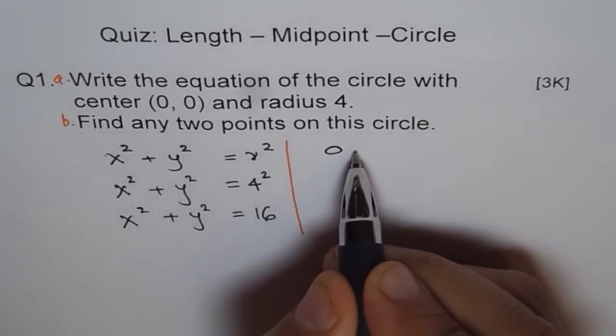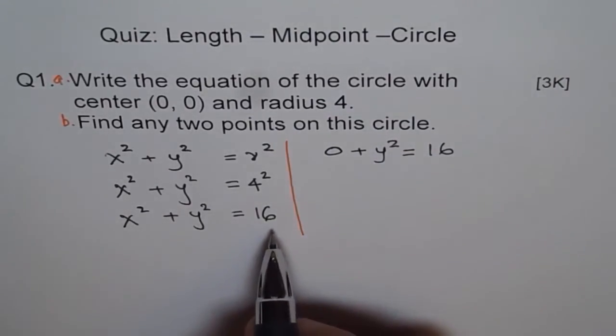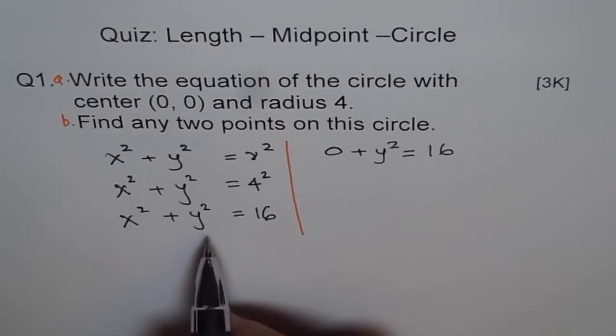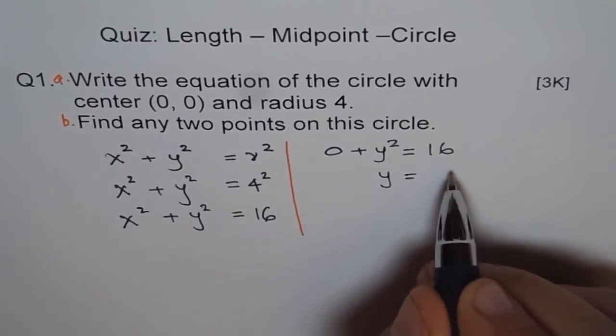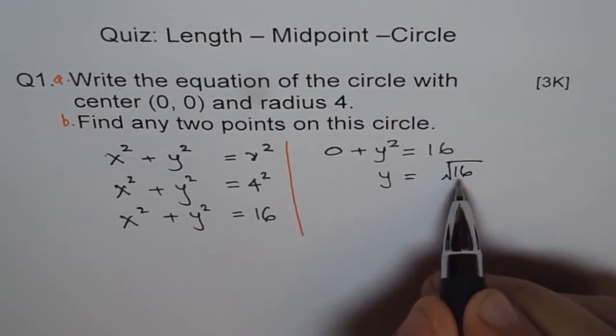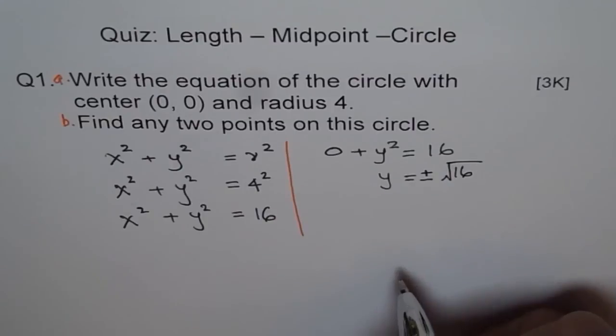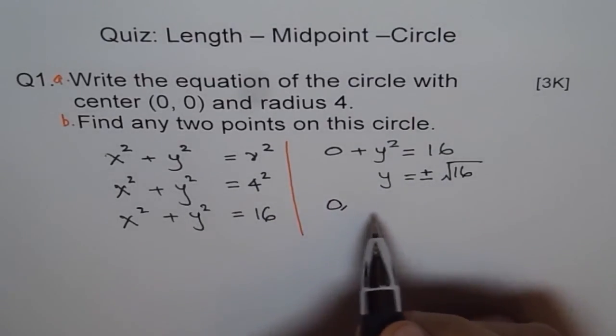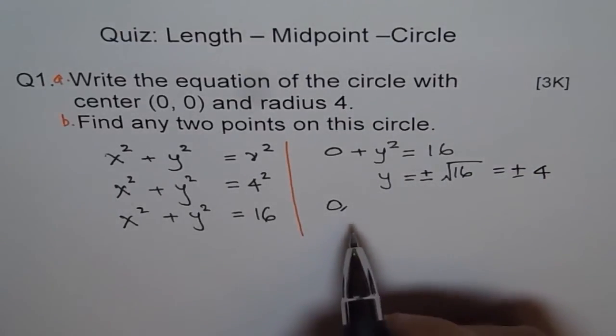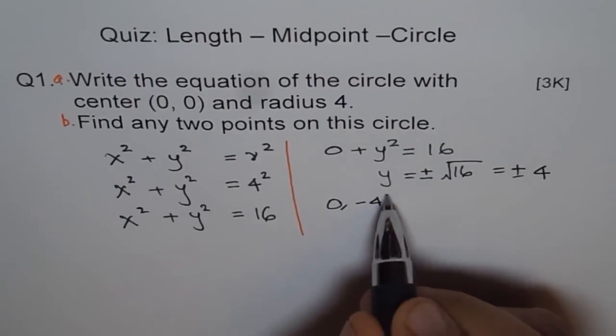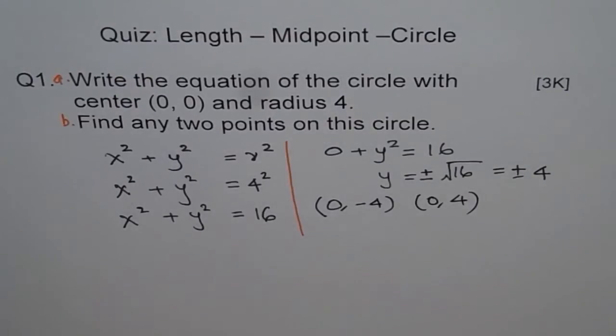In that case, 0 + y² = 16. Putting this in the equation x² + y² = 16, we get y = √16. Whenever you do square root, don't forget plus and minus. That gives you two points straight: y = ±4. So one point is (0,-4) and the other is (0,4). That's how you get two points.